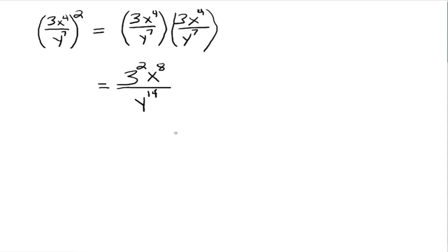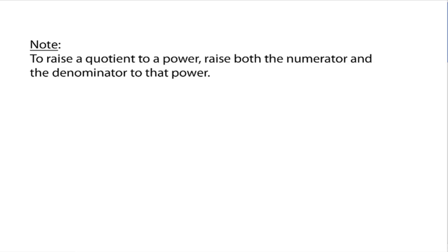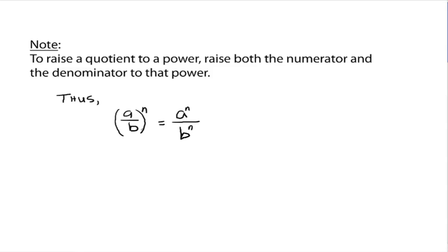So it's very similar to the product rule. To raise a quotient to a power, raise both the numerator and the denominator to that specific power. In math language: a over b raised to the nth power is the same thing as a to the n over b to the n. You just raise each part — the numerator and the denominator — to the respective power.